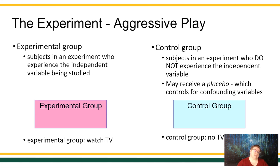They might receive a placebo, which for instance, if I'm saying that the violent TV is my experimental variable or my independent variable, then maybe I want to expose them to some TV, but TV that I know is not violent. So maybe we're going to let them watch Dora the Explorer.